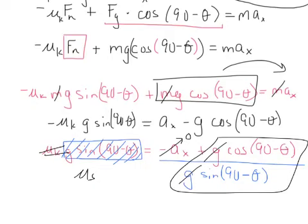One more thing: if there was a person pulling the object down the ramp, all that changes in the x-direction equation is you add a plus fp term. That fp carries down through every subsequent step. If someone was pulling up the ramp — trying to keep it from sliding but gravity was too much — fp would be negative fp, same sign as the friction term, because it acts up the plane.